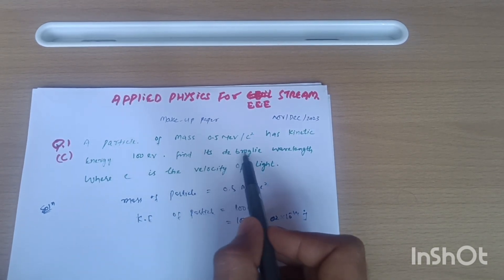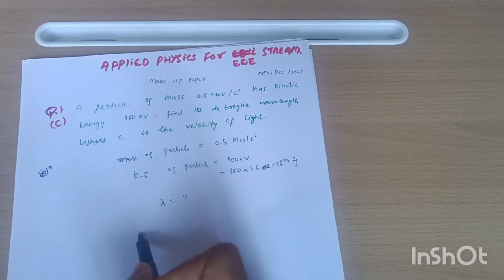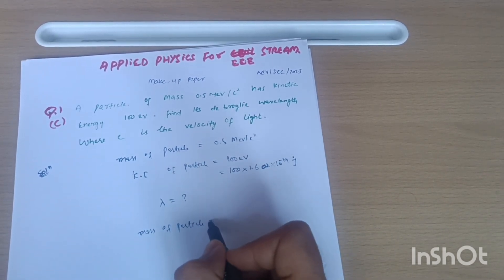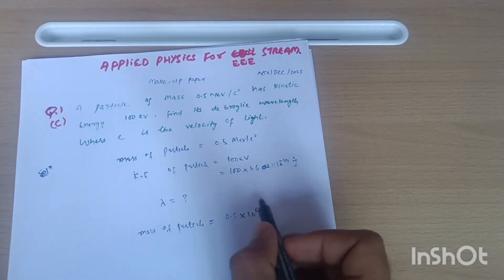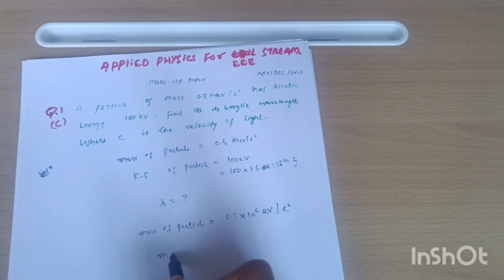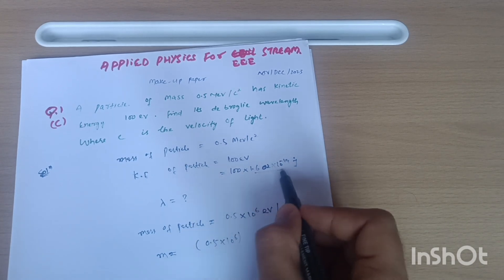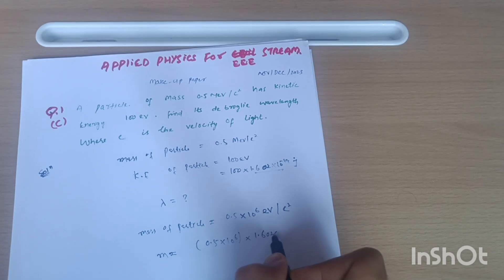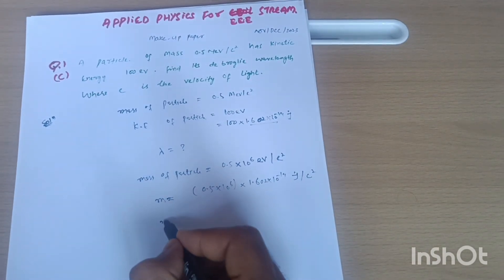We have to calculate the de Broglie wavelength, denoted by lambda. For the mass, it is given in mega electron volts, so I convert it to electron volts: 0.5 multiplied by 10⁶ gives electron volt per c squared, where c is the velocity of light. To convert further to joules, multiply by 1.602 × 10⁻¹⁹, giving joules per c squared.